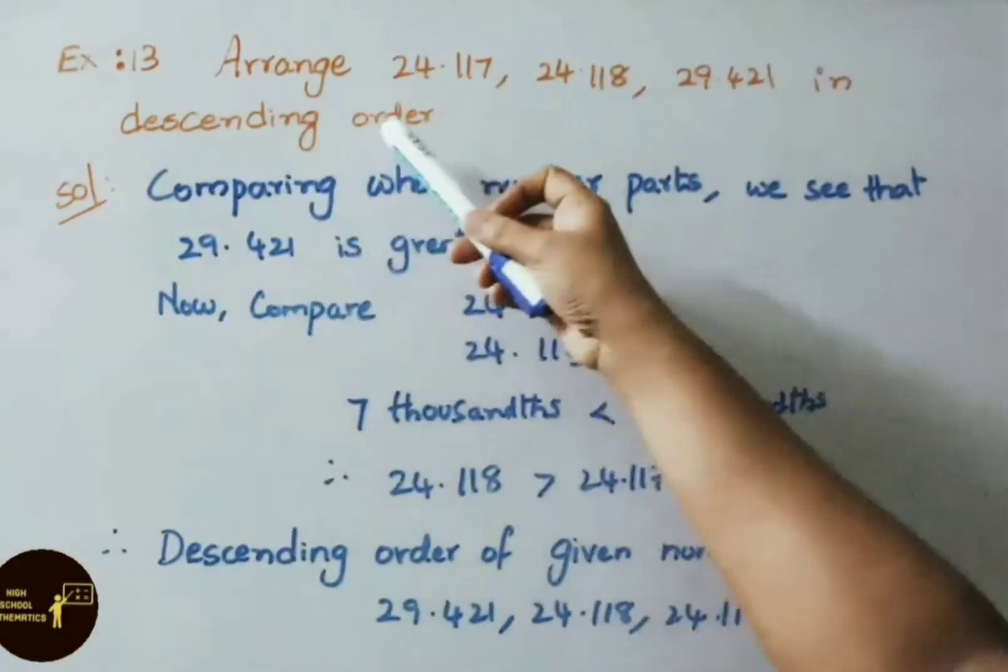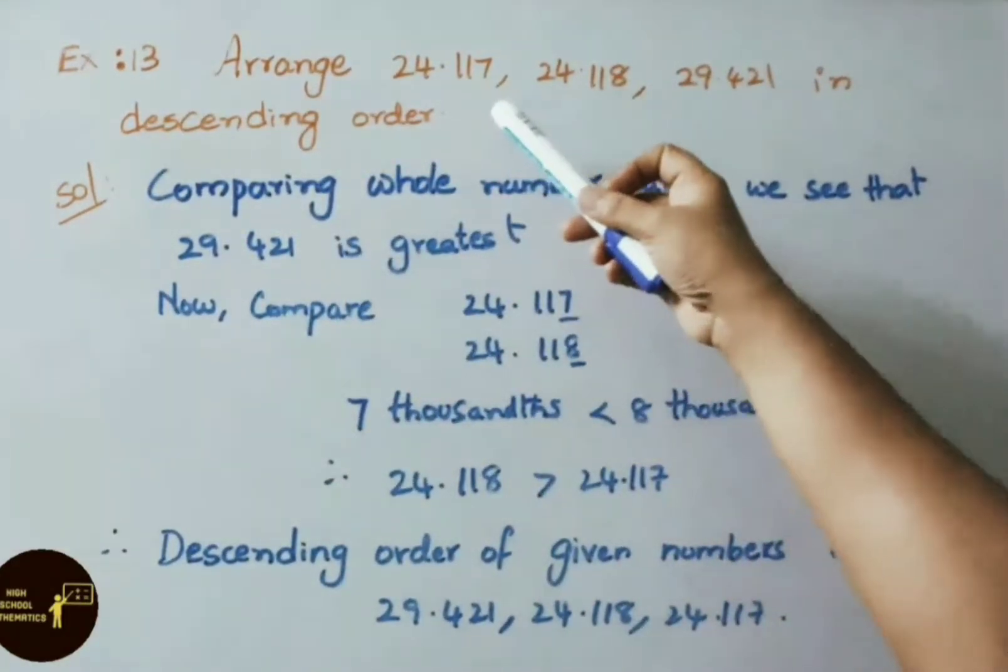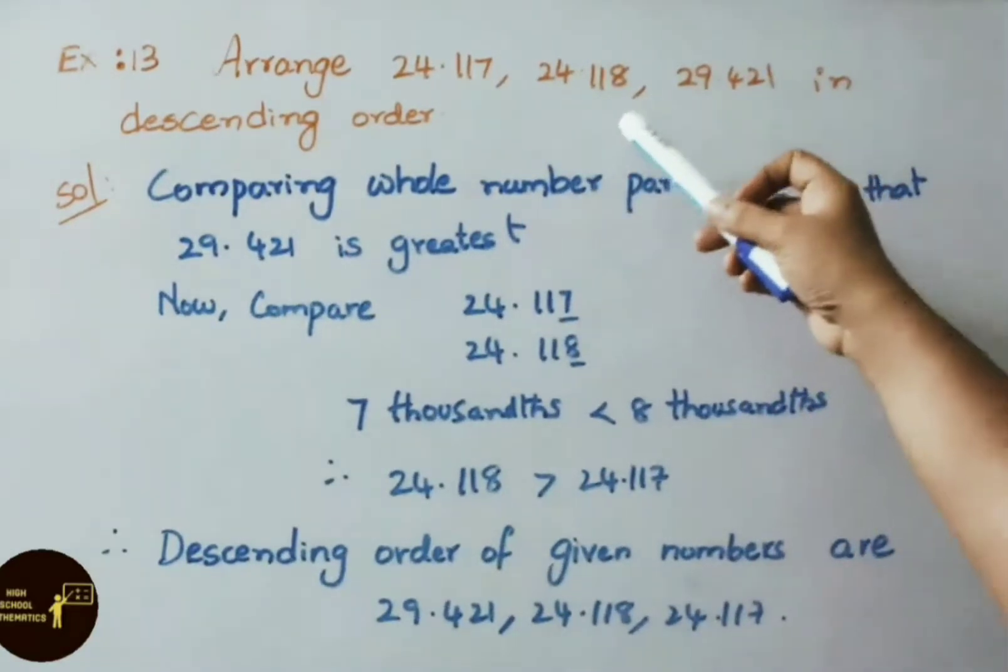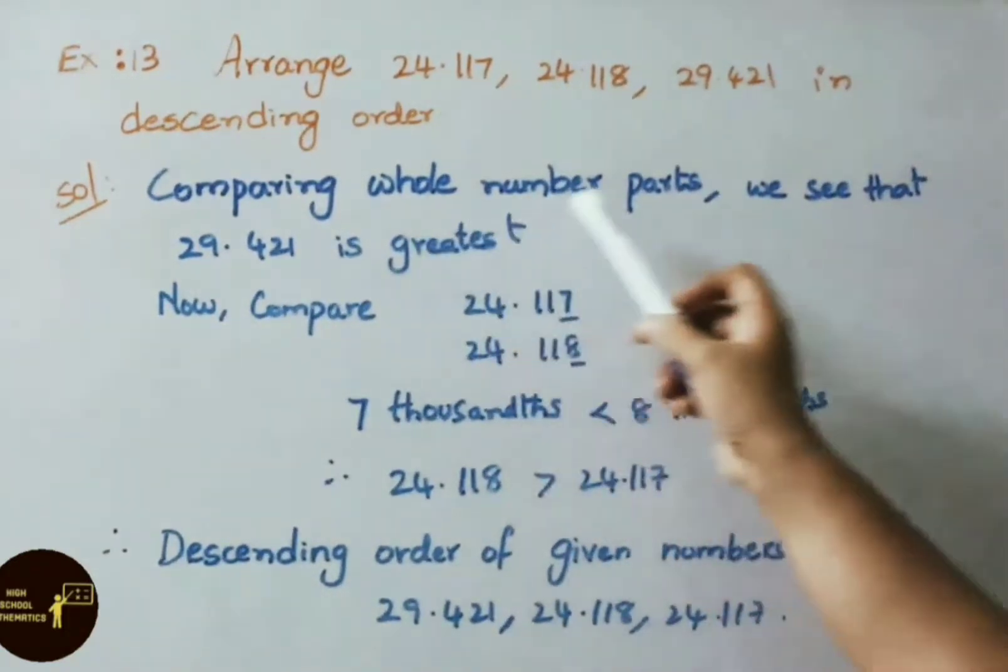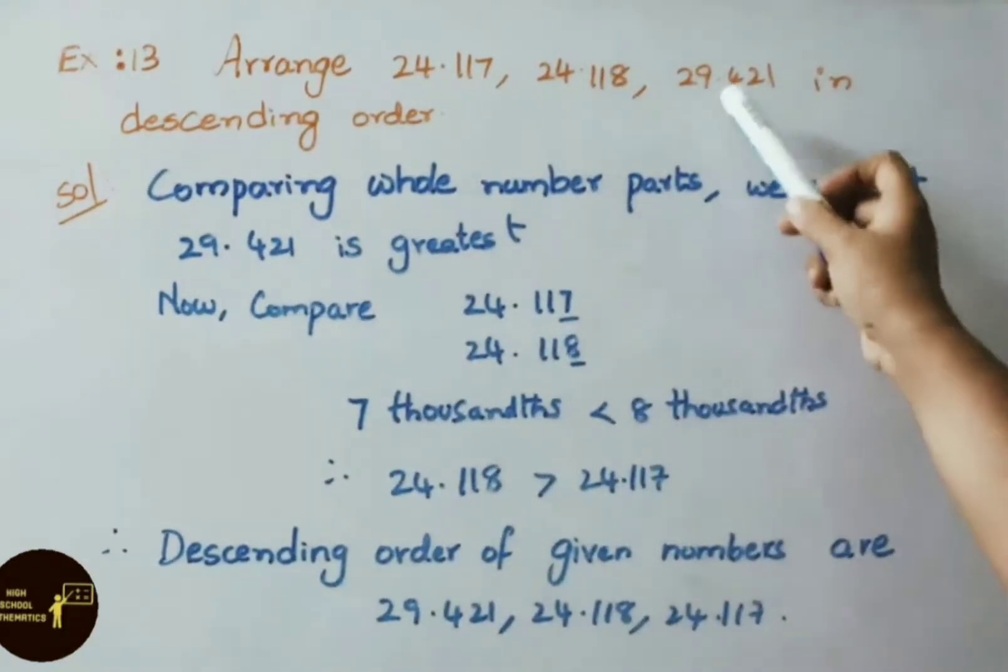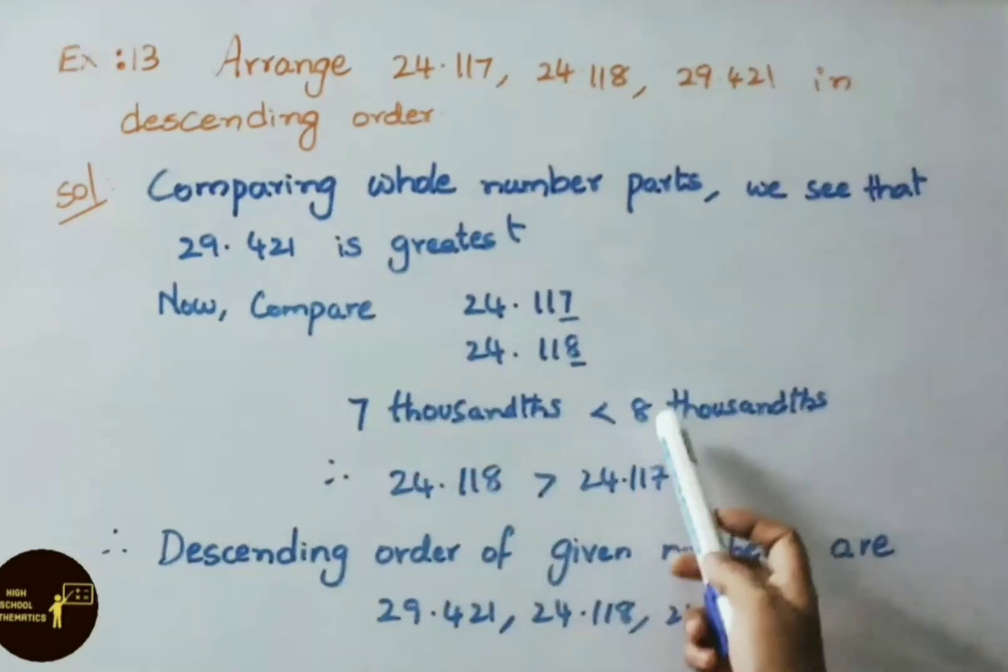Example 13: Arrange 24.117, 24.118, 29.421 in descending order. First compare whole number parts. We see that 29.421 is greatest. Now compare the remaining two numbers from left to right.